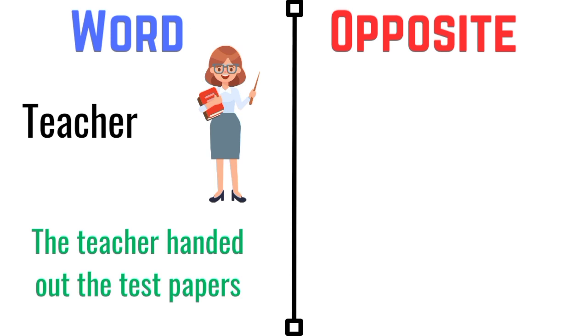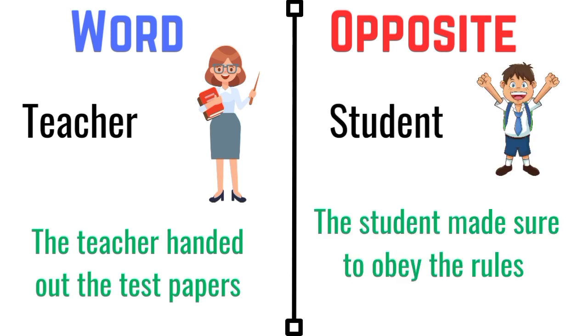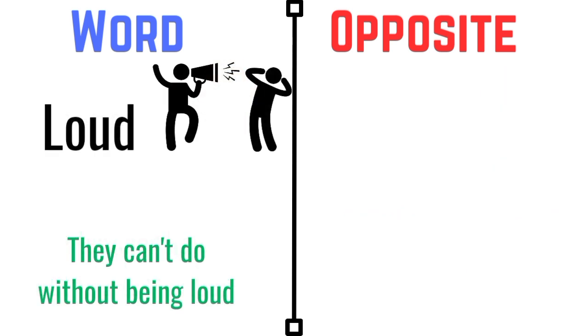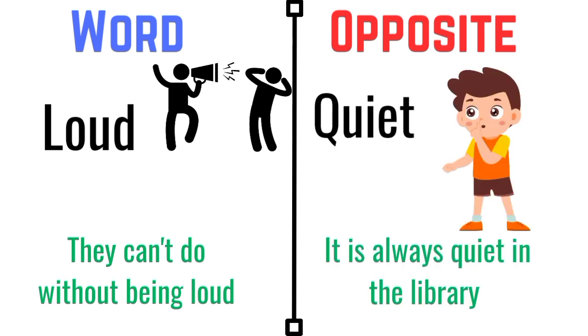Teacher. The teacher handed out the test papers. The opposite of teacher is student. The student made sure to obey the rules. Loud. They can't do without being loud. The opposite of loud is quiet. It is always quiet in the library.